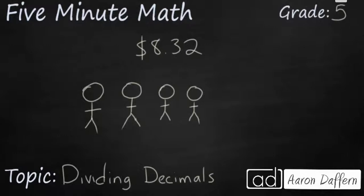Let's start with our first problem. Let's say you have $8.32, and you need to divide it evenly among 4 friends. What we're going to do is set this up like a traditional long division problem. 4 is our divisor. We're going to write $8.32 as our dividend. We're going to drop the dollar sign. You don't need it at this point.